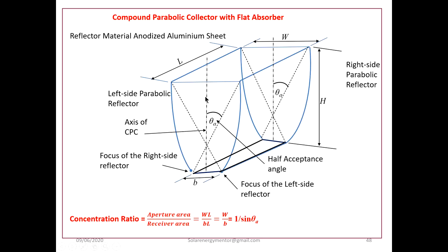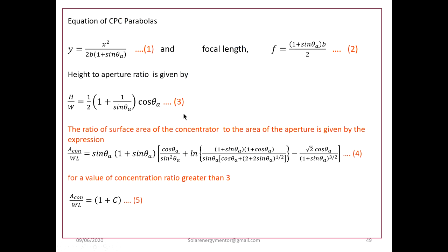This is the length of the CPC, this is the width, and this is the height. The concentration ratio in compound parabolic collectors is given by aperture area divided by absorber area. The aperture area is W into L, and the receiver area has width b. The concentration ratio is W (width of the aperture) divided by b (width of the absorber), which is also equal to 1 divided by sin(theta-a), the acceptance angle — already derived in the last lecture.